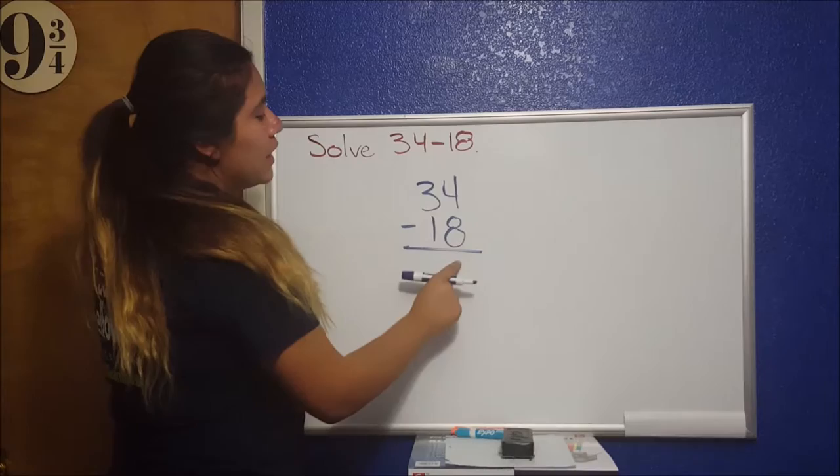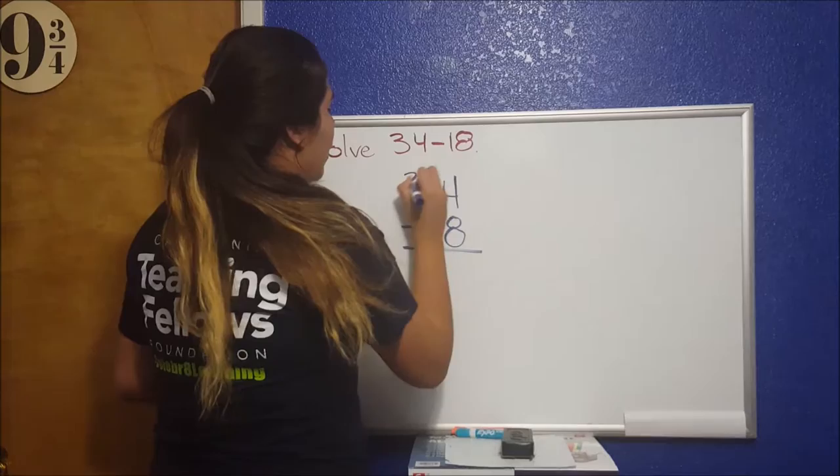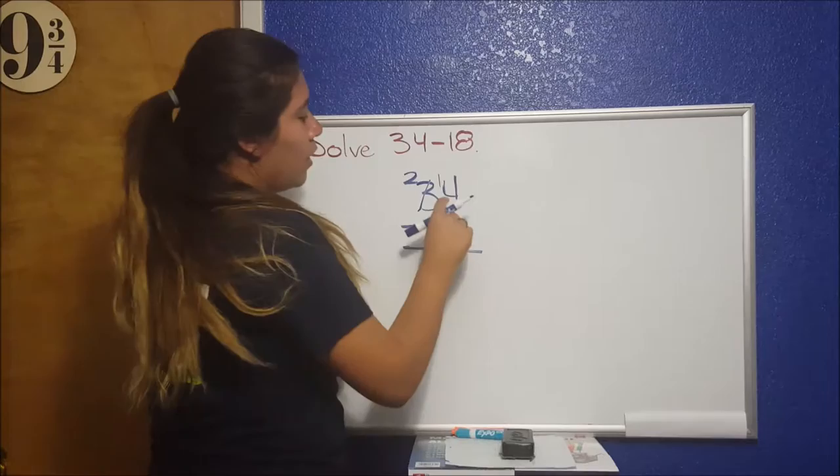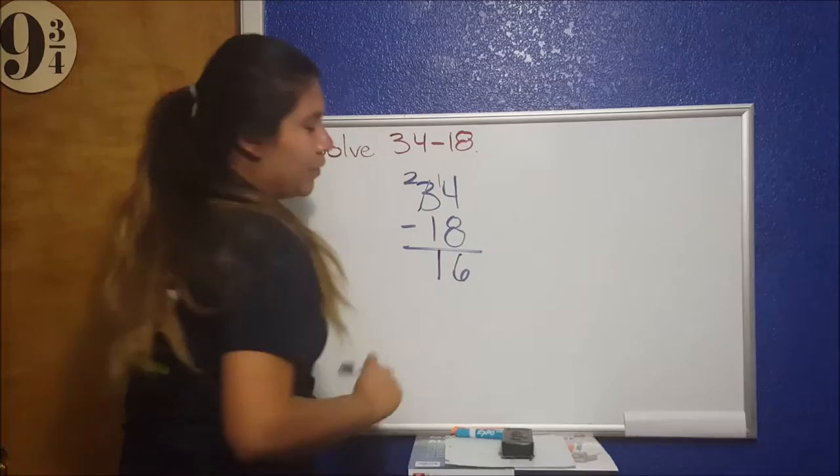So 4 minus 8 is not possible, but if we take out a 10 from the tens place of 3 to make it 2, borrow the 1, 14 minus 8 equals 6, 2 minus 1 equals 1. Our answer is 16.